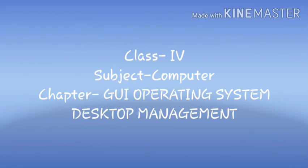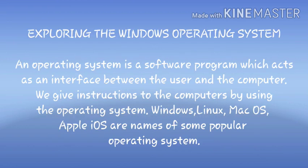Today we are going to do the second chapter of computer: GUI operating system and desktop management. Exploring the Windows operating system — what is an operating system? It is a software program which acts as an interface between the user and the computer. We give instructions to the computer by using the operating system. Windows, Linux, Mac OS, and Apple iOS are the names of some popular operating systems.